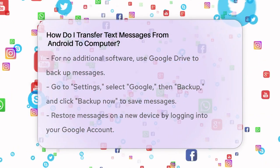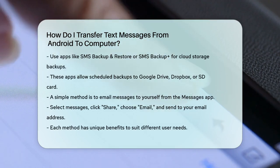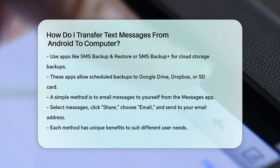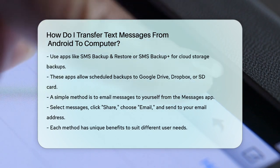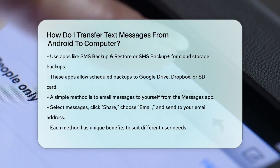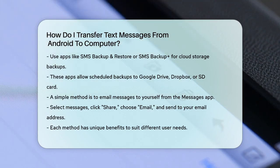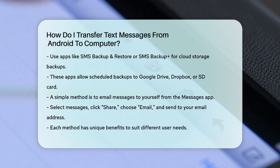If you're looking for a more straightforward method without using any apps, you can simply email the text messages to yourself. Open the Messages app on your Android phone, select the messages you want to transfer, click the menu icon, and choose Share, followed by Email. Enter your email address and send the messages. You can then access these messages on your computer by logging into your email account.